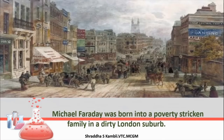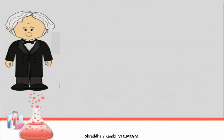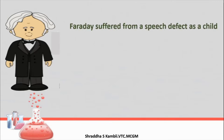He was born into a poverty-stricken family in a dirty London suburb. Poverty-stricken means a very, very poor family that did not have properly enough to eat. Of course, it was very difficult for him to have money to spend on experiments. They lived in a very dirty part of London — like a slum area. So he was born into a very poor family and did not have a rich beginning in life. He also had other issues — he suffered from a speech defect.